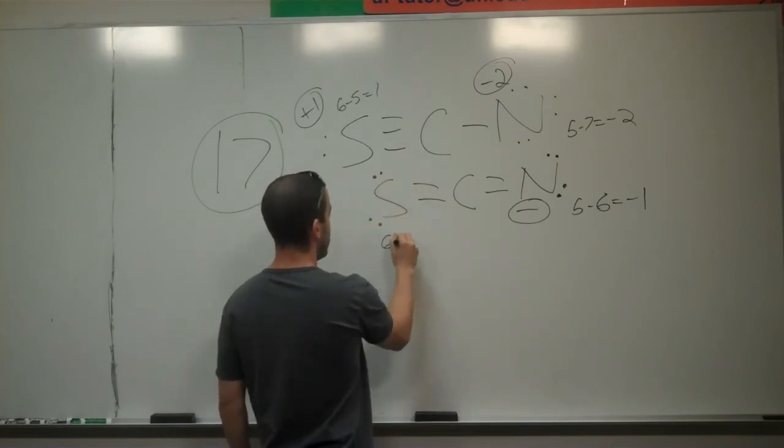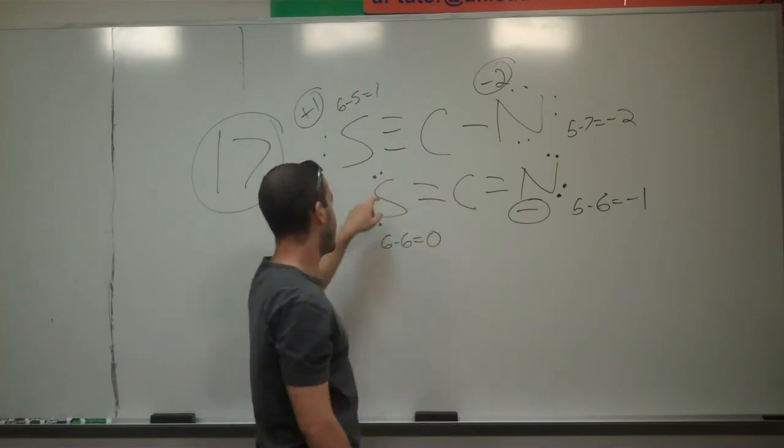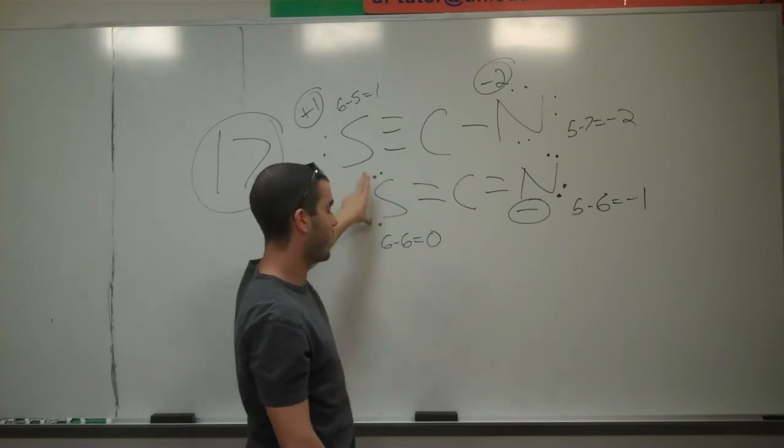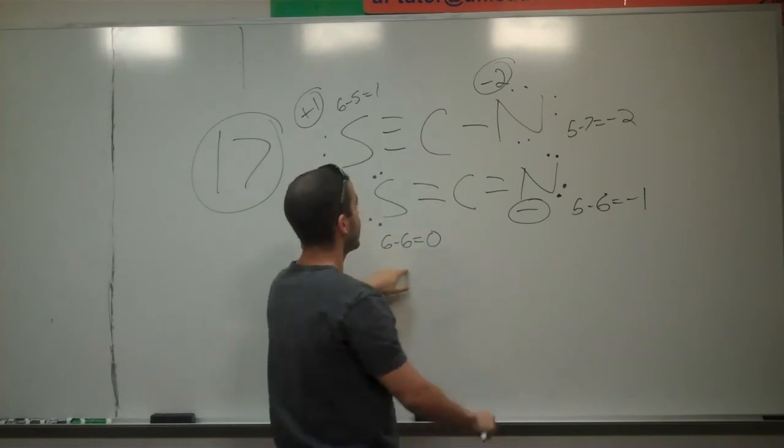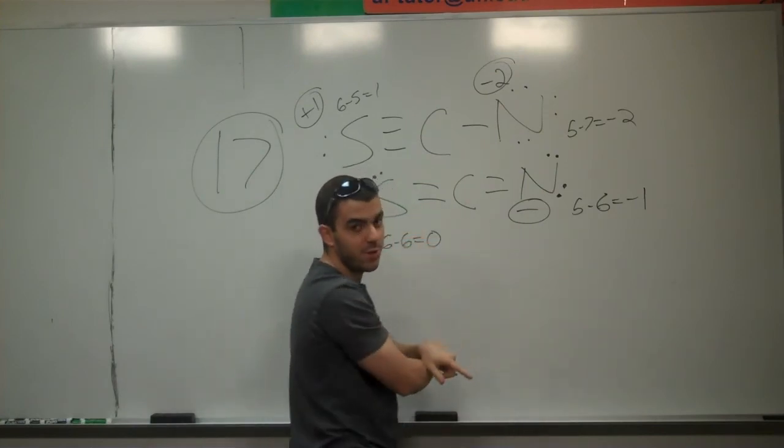In this case, because it has one, two, three, four, four single electrons from lone pairs, and five, six total, this one is neutral. So then we overall have a minus one system.